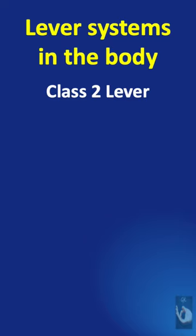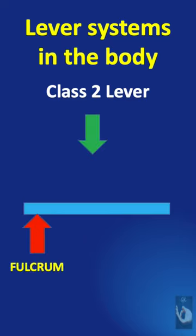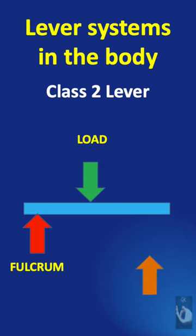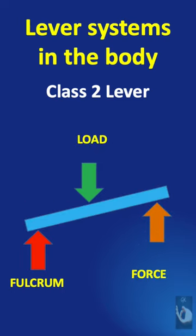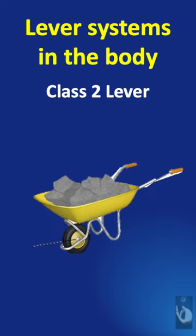In class 2 lever, fulcrum is on one end, the load is in the center and the needed force is on the other end. So this force must be applied to counteract this load. Example is wheelbarrow.